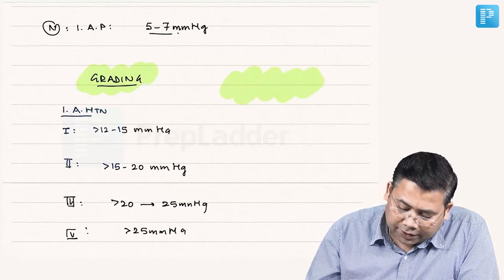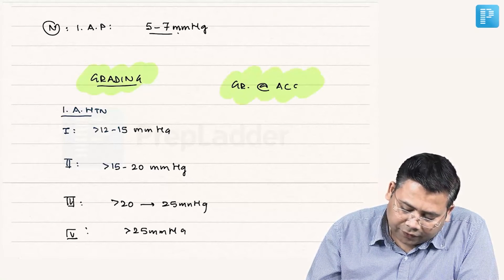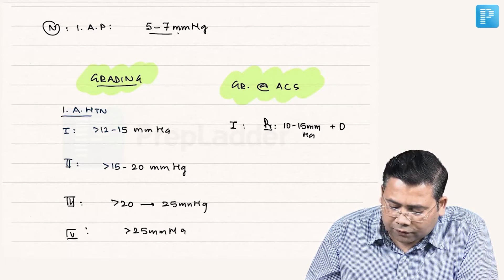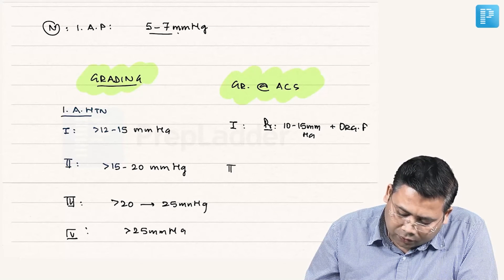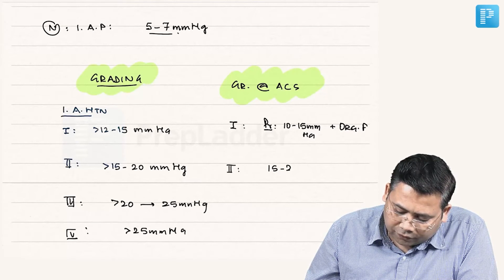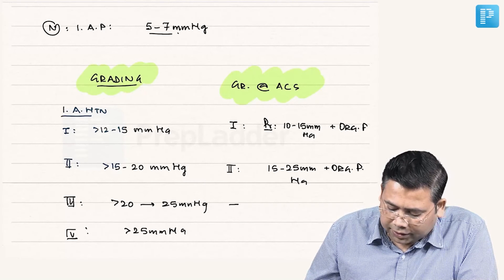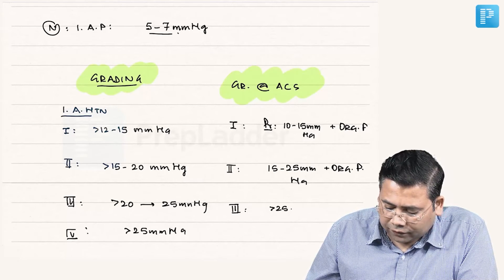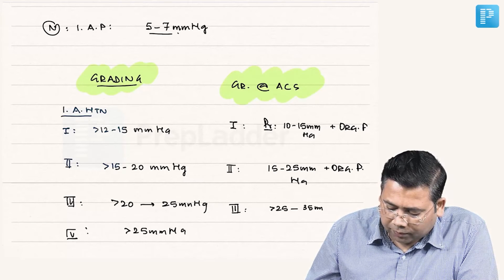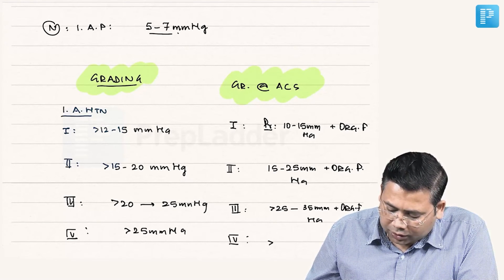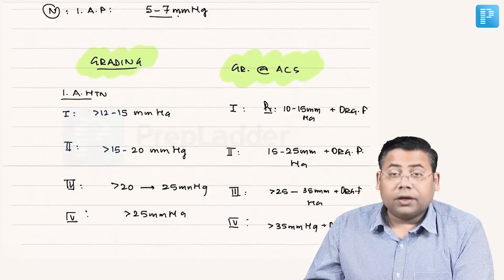The grading of ACS is a bit different. Grade 1: pressure 10 to 15 mmHg plus organ failure. Grade 2: 15 to 25 mmHg plus organ failure. Grade 3: more than 25 up to 35 mmHg plus organ failure. Grade 4: more than 35 mmHg plus organ failure.